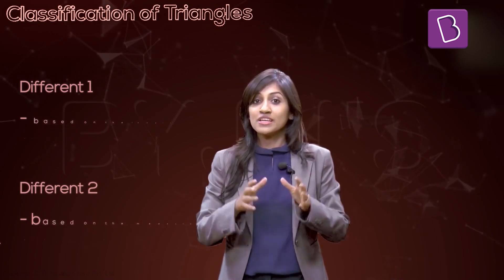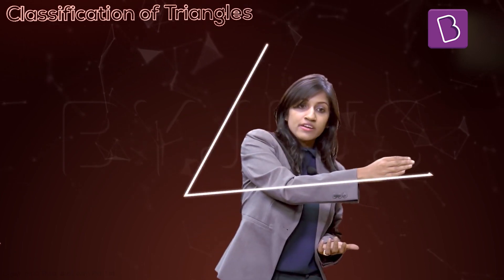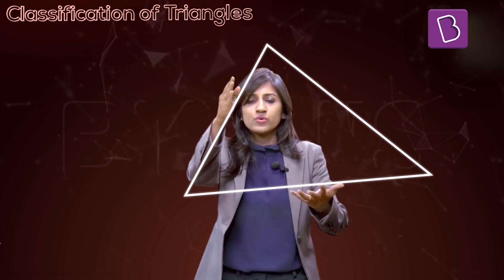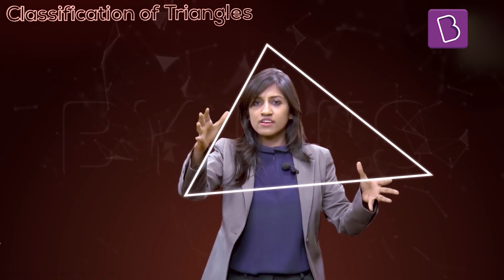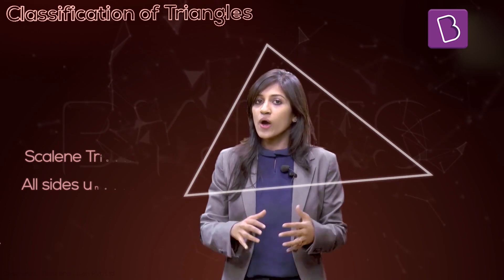So let's talk about the length first. What are the possibilities? If it's based on having equal or unequal sides, the first case can be a triangle where all three sides are not equal — this side is not equal to this side, which is not equal to this side. This special triangle gets a very special name: it's called a scalene triangle.